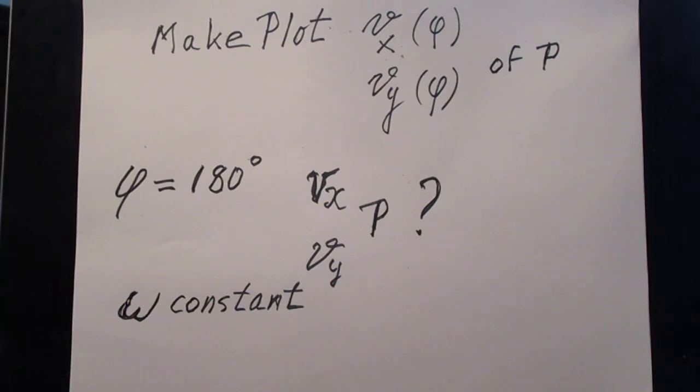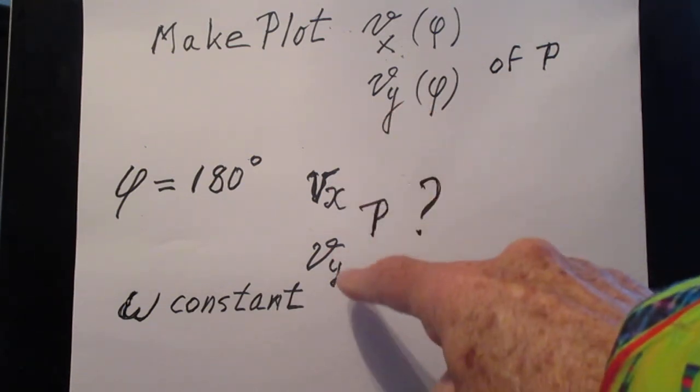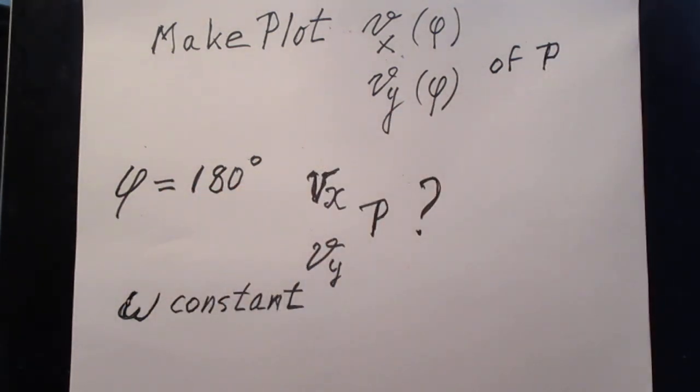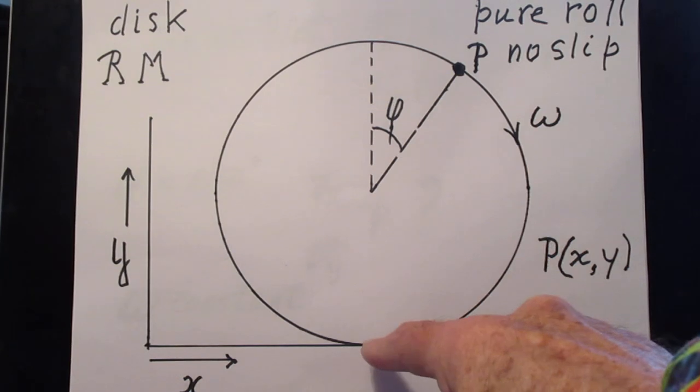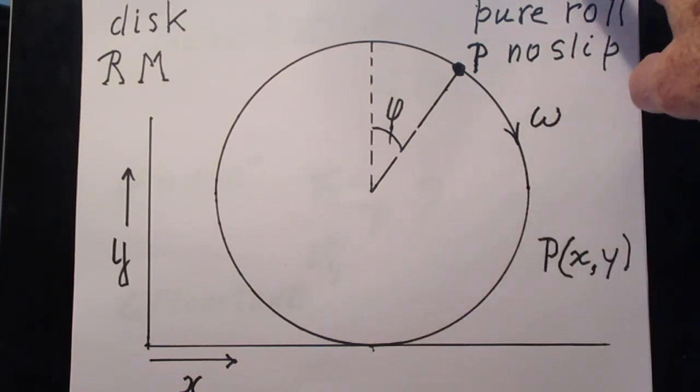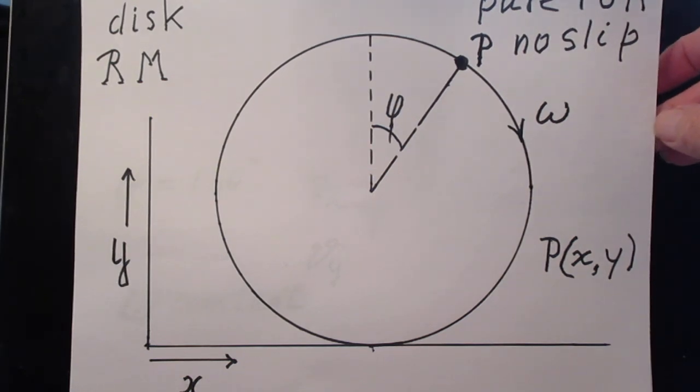And when that's done, I want you to tell me what the V of X of point P is and V of Y when phi is 180 degrees. So that means that point P is here, where P is then touching the flow.